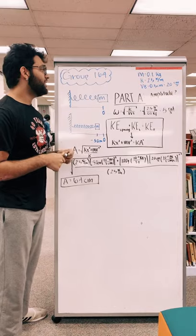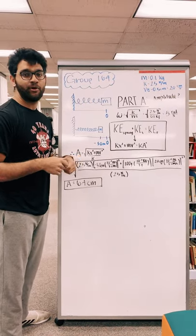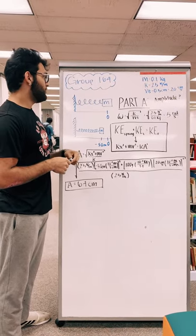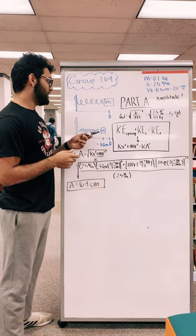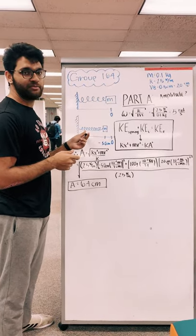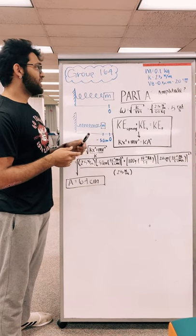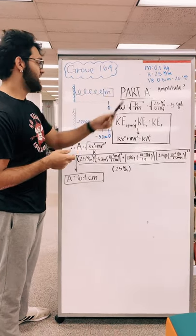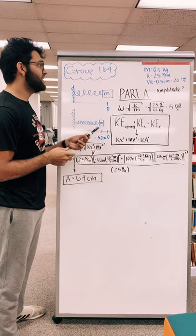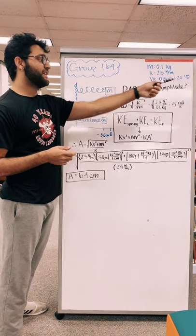We're group 164. Our question was on simple harmonic motion. We had a 100 gram block attached to a spring, and all we knew was the spring constant was 2.5 Newtons per meter, and at 5 centimeters we knew the velocity was 20 centimeters per second.